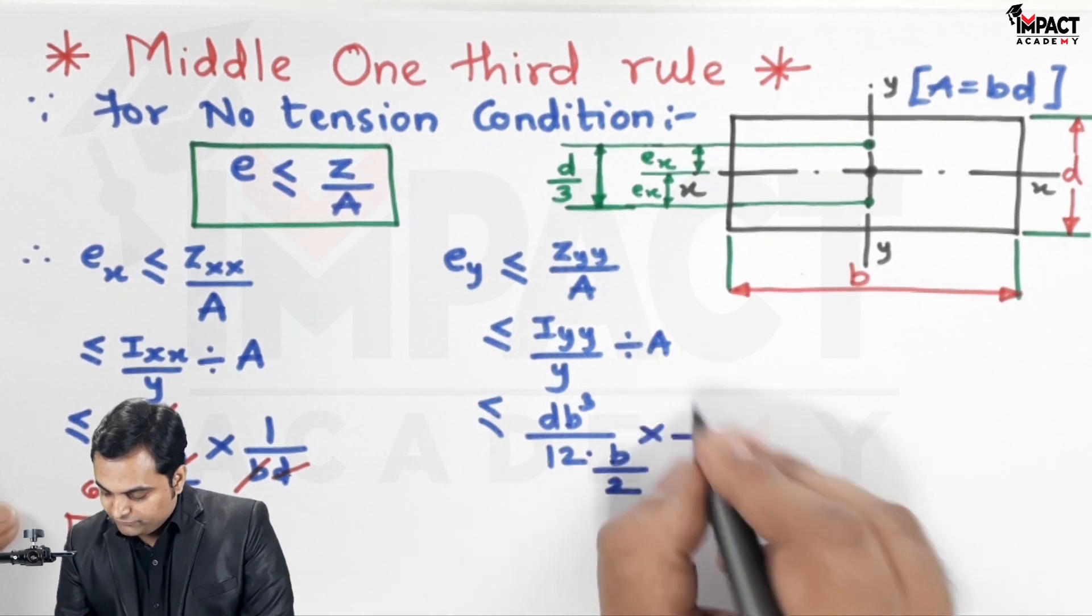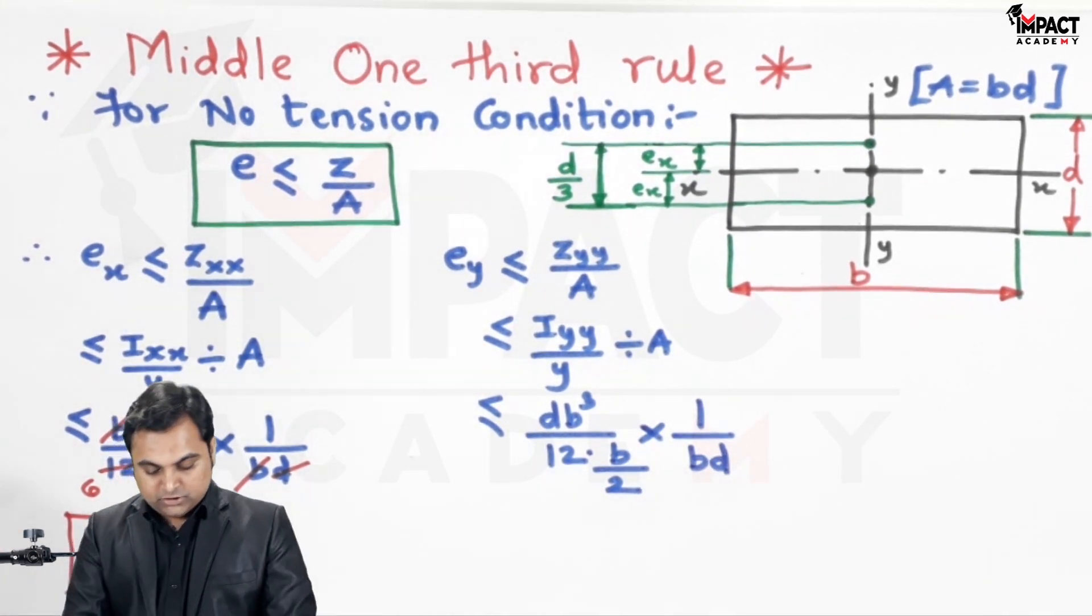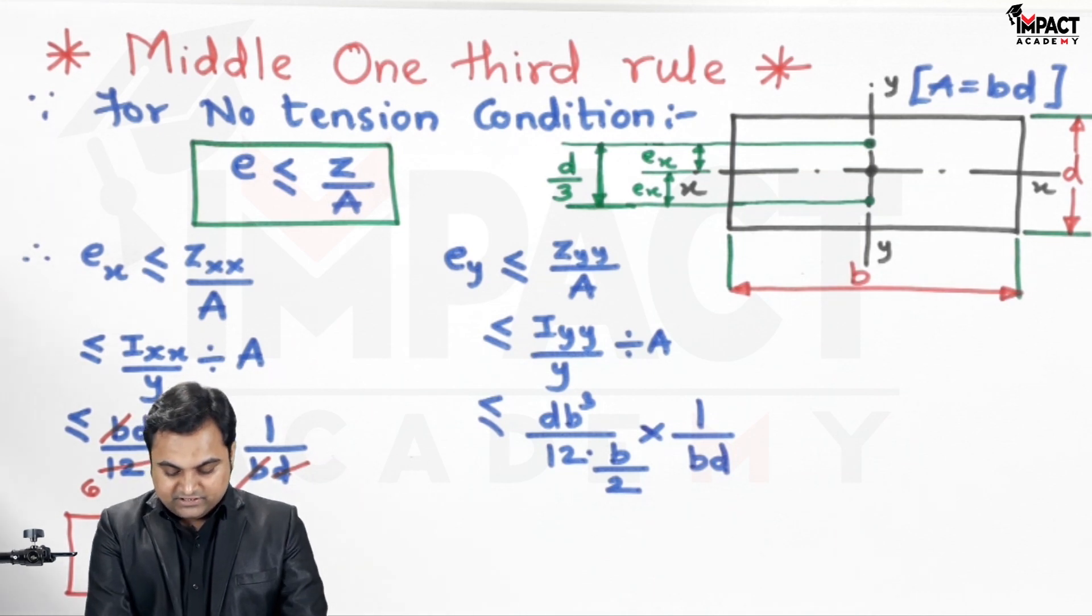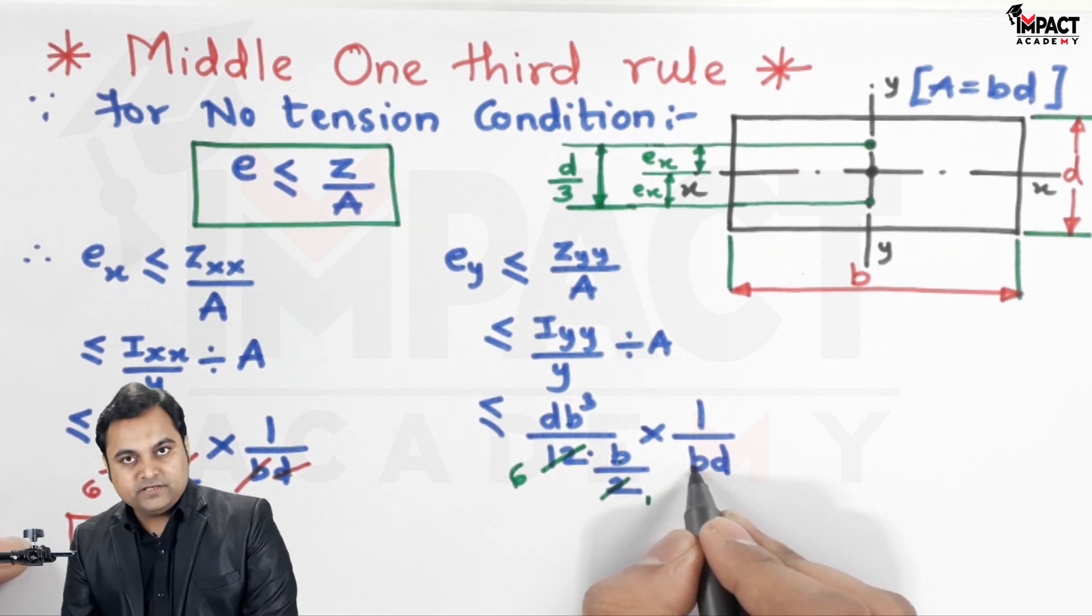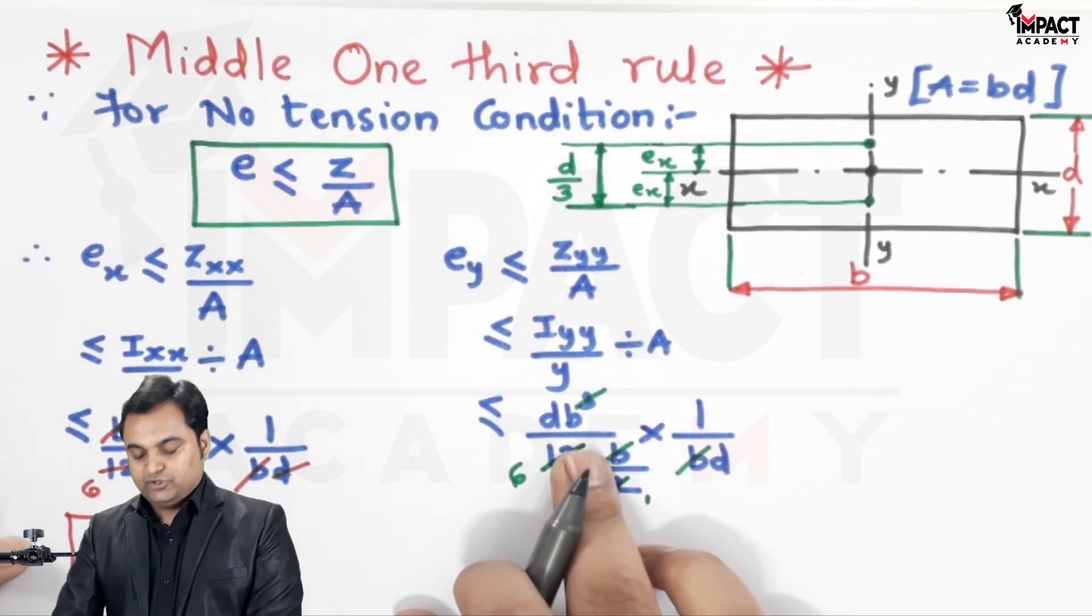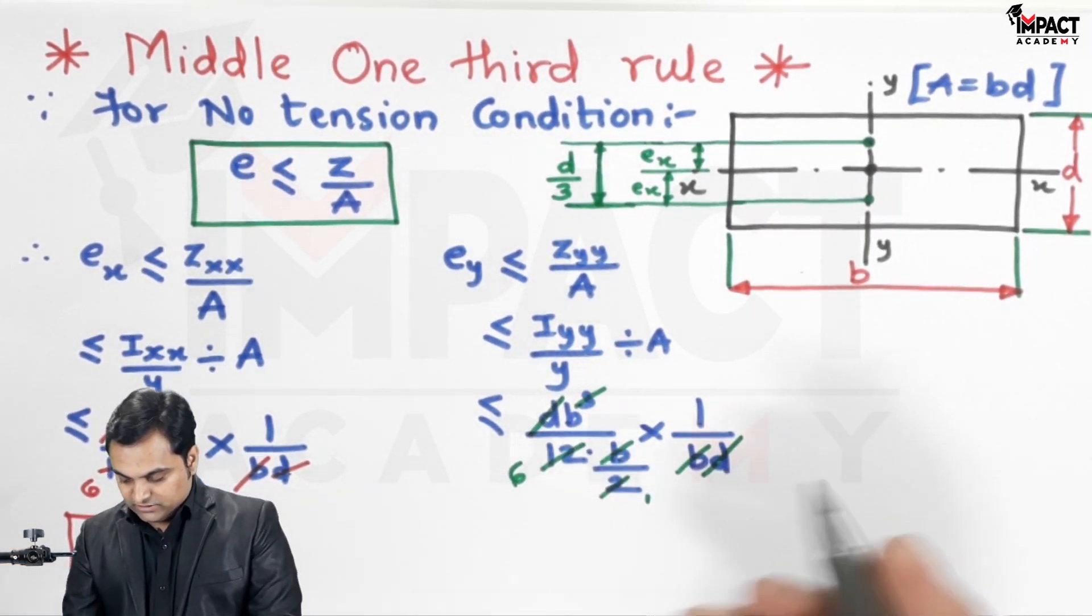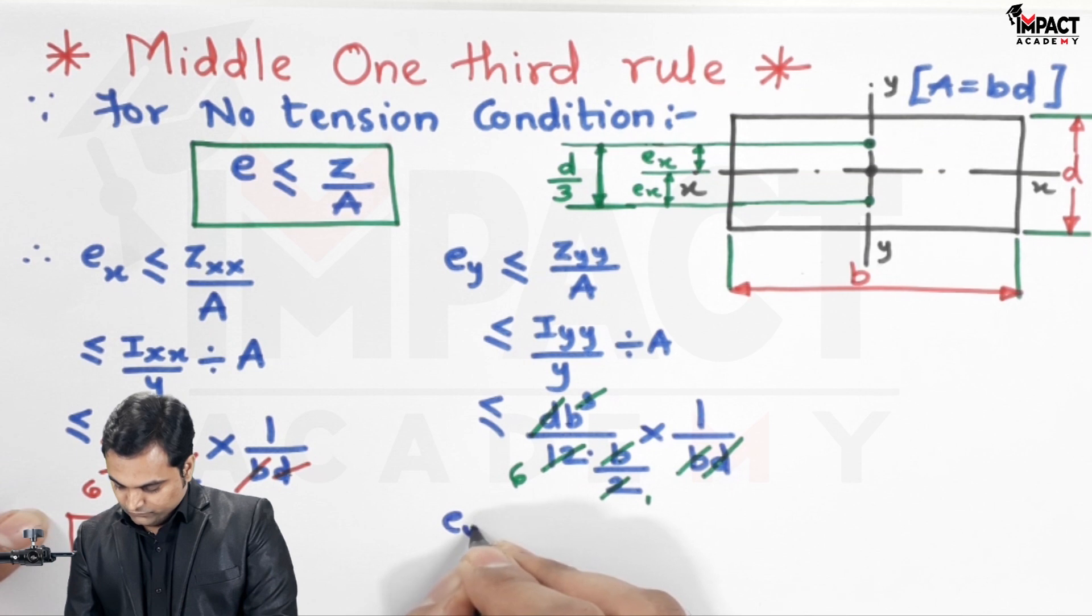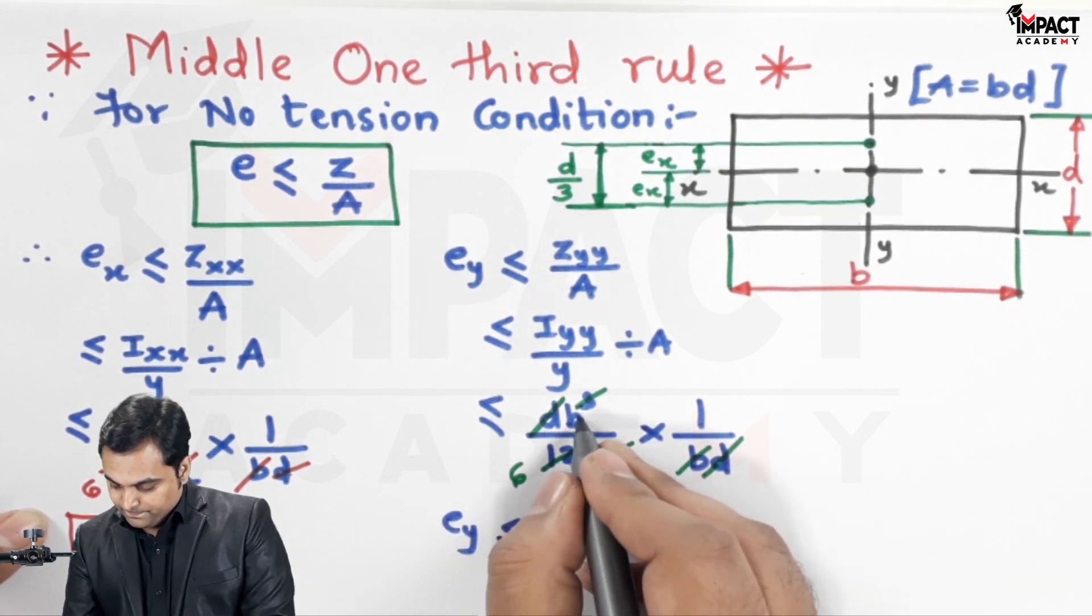Then this division would be converted into multiplication if we take the reciprocal of area, so 1 upon A, and A is b into d. So here also after the cancellations, b and b is b², so b² gets cancelled and in the numerator b remains. Then d and d will get cancelled out, so e_y is less than or equal to b/6.